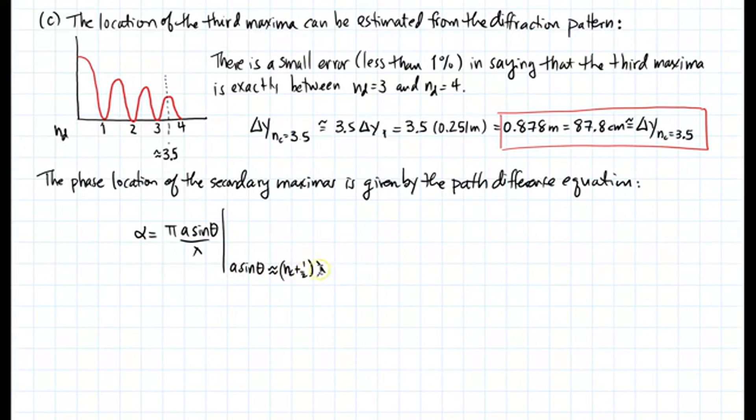In other words, it's 3.5 pi, 5.5 pi, 7.5 pi. Since this is the third maxima, that's the phase location.